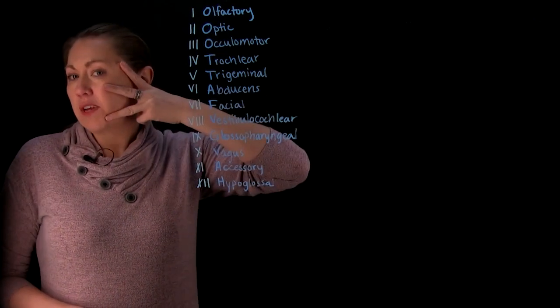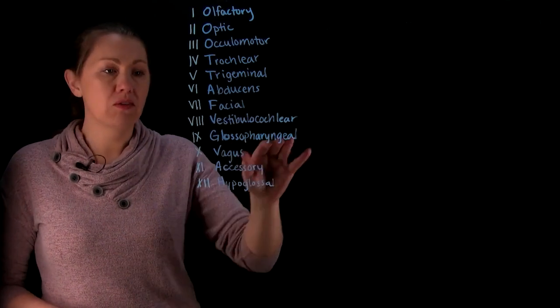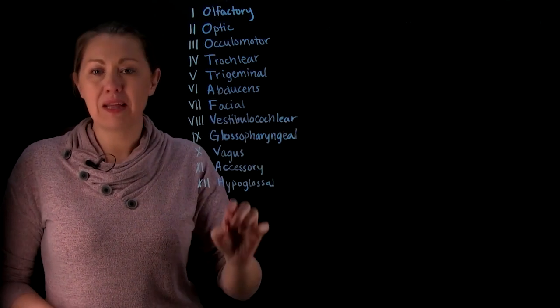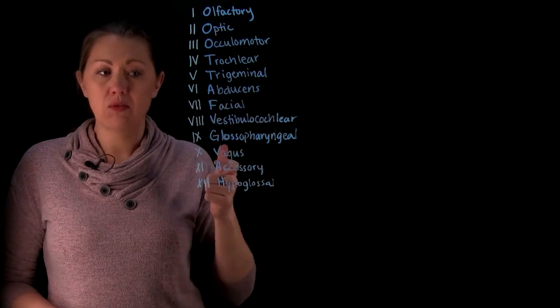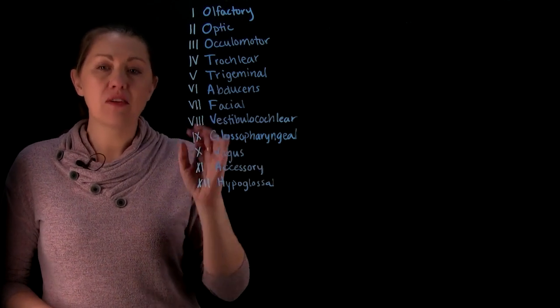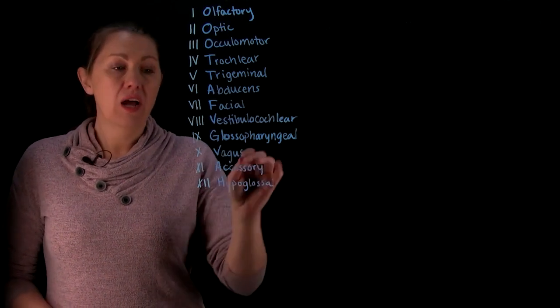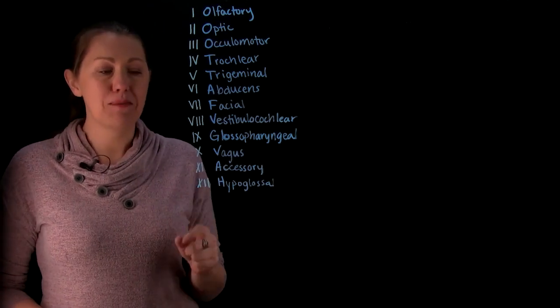Our trigeminal splits across the face into three branches. Facial, it's going to go to the facial muscles. Vestibulocochlear, with a name like that, you go to the vestibule and the cochlea. Vestibule deals with balance. Cochlea deals with hearing. Glossopharyngeal. Gloss, if you hear that, think tongue. And pharyngeal, pharynx. So we're going to deal with those. Vagus is my favorite, and we'll come back to that. But that's your autonomic nervous system.